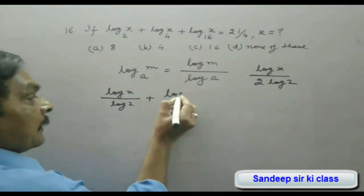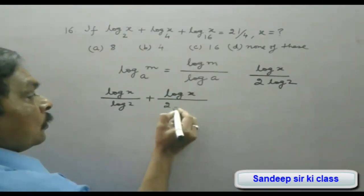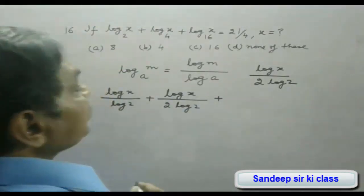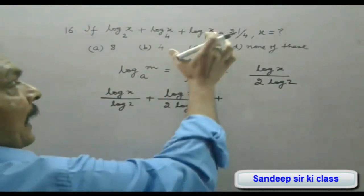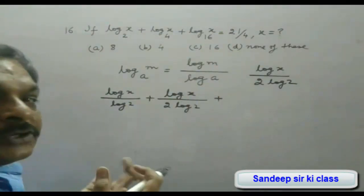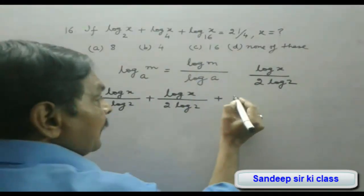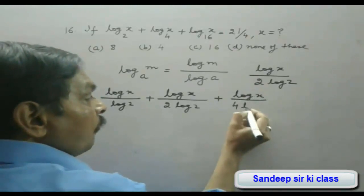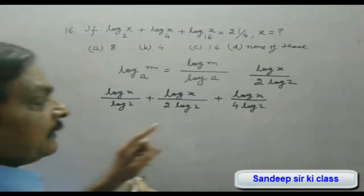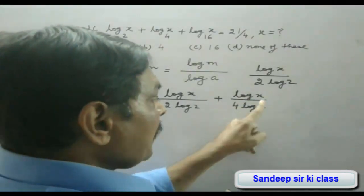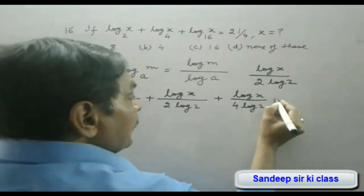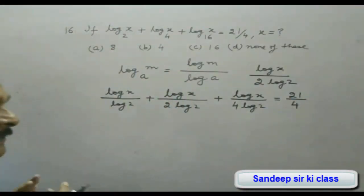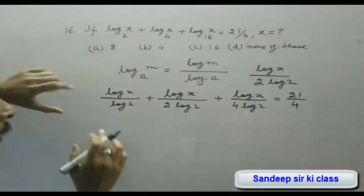The third term is log x upon log 16. Since 16 is 2 to the power 4, log 16 equals 4 log 2, so the third term becomes log x upon 4 log 2. The sum of all three terms is given as 21/4.